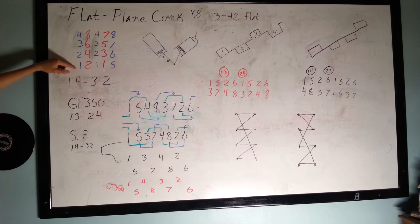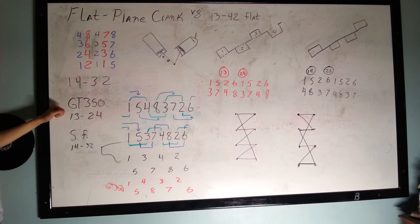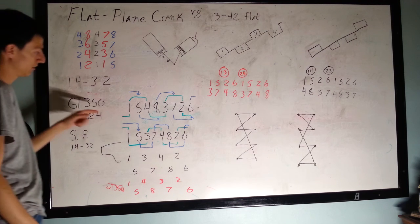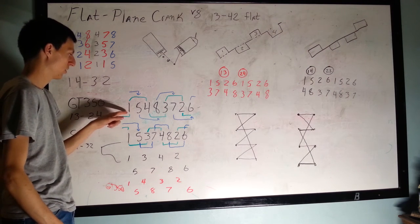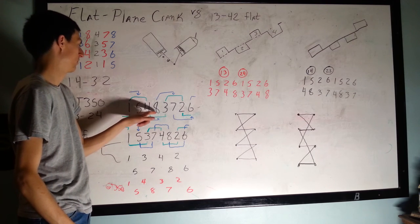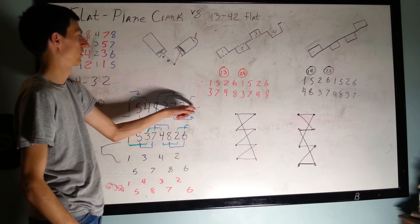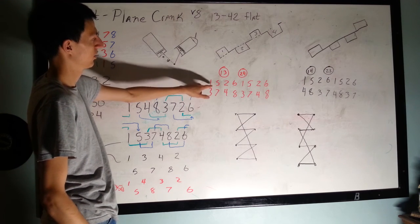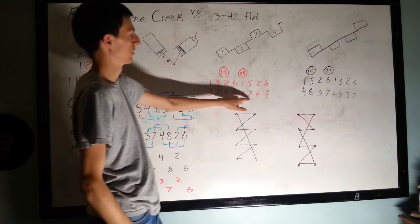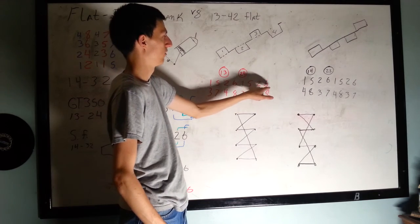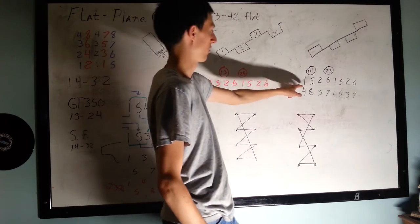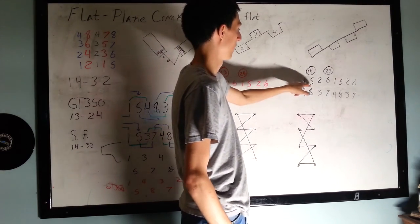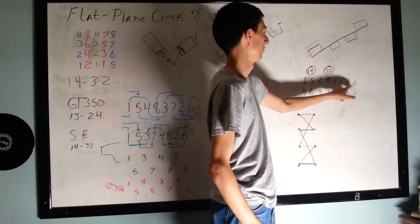So for the GT350 style crank, you get this firing order, it's 1-5-4-8-3-7-2-6, and you can see it from its available firing orders, 1-5-4-8-3-7-2-6. The standard flat plane cranks for V8s is 1-5-3-7-4-8-2-6.